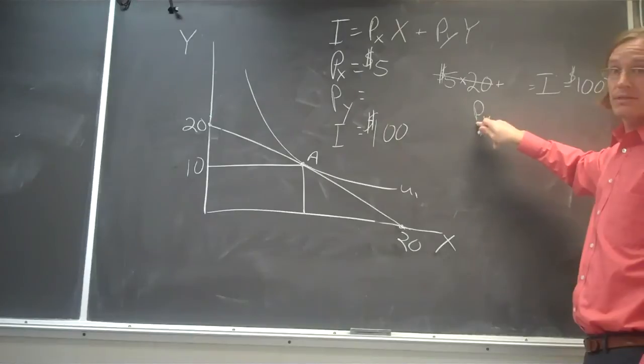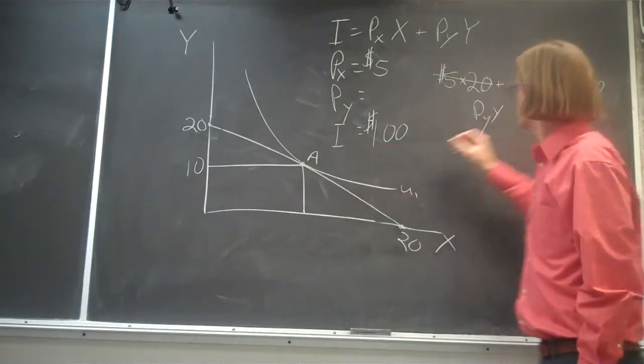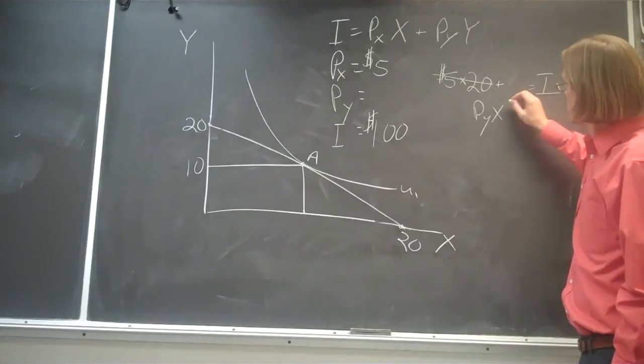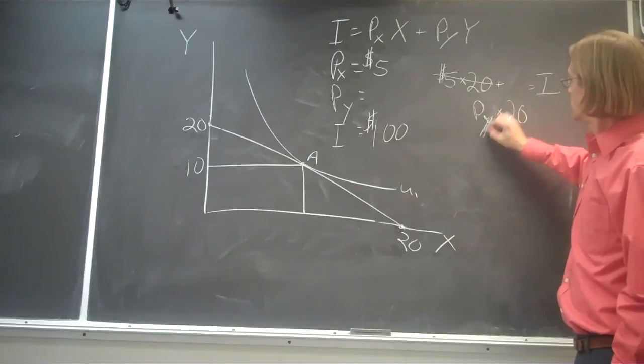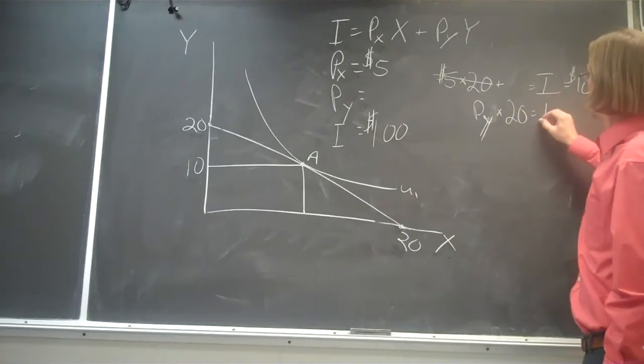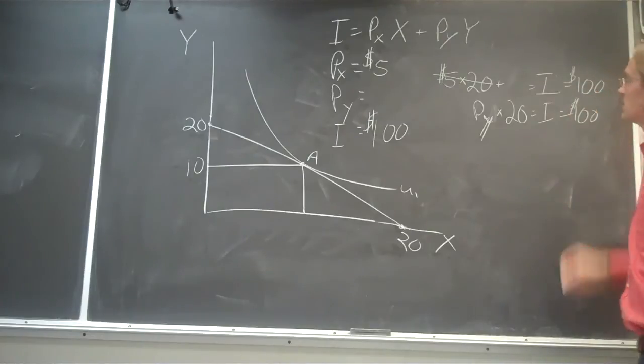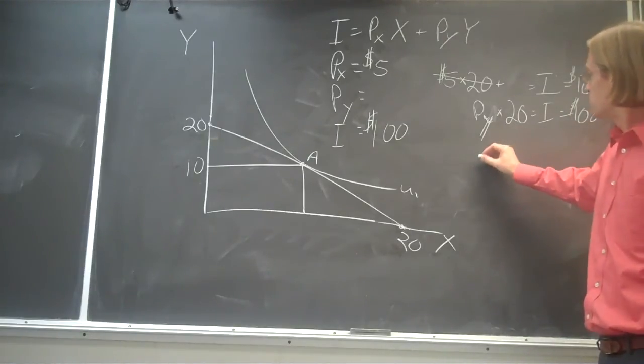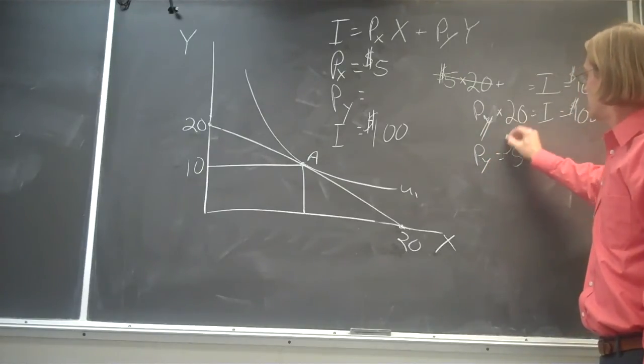But we know that the price of Y times the number of units of Y that we're purchasing, that should be Py times 20 is going to equal our income, which is equal to 100 bucks. And so from that we can do some really high-end algebra to show that the price of Y is 5 dollars.